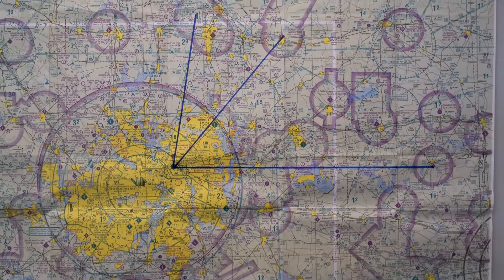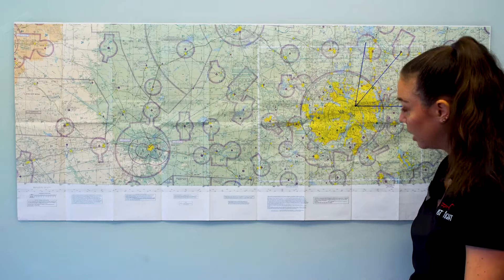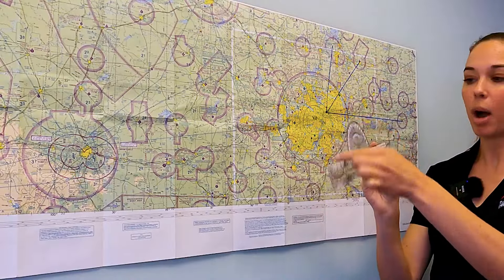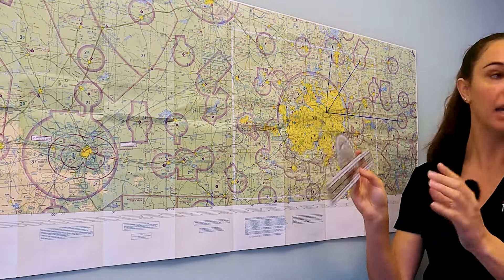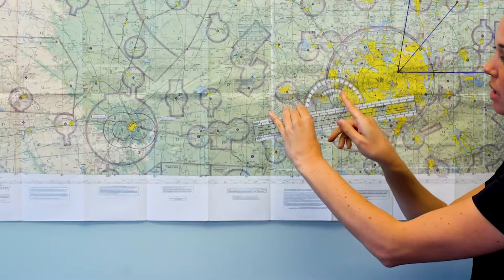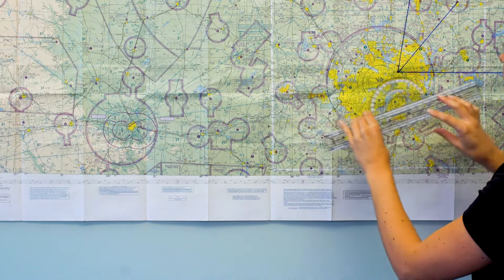Okay, so for this example, I've drawn a course from Addison to North Texas Regional Airport. It's almost directly north and my flight path never crosses a line of longitude. So how could I possibly measure what direction to fly if I can't ever make it intersect a line of longitude like we've been talking about? That's what this small inner scale is for here.